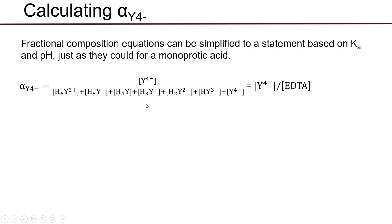the sum of the concentrations of all the EDTA species together. So Y4- divided by the concentration of H6Y2+, plus H5Y+, plus H4Y, plus H3Y-, plus H2Y2-, plus HY3-, plus Y4-. That's your alpha value.